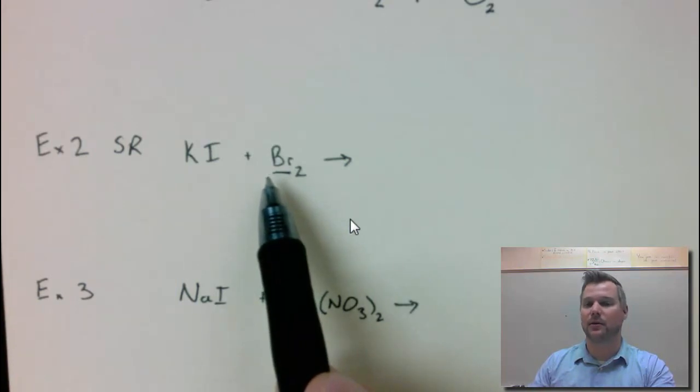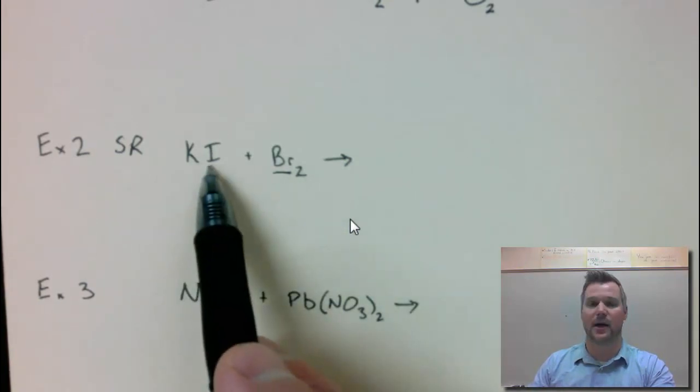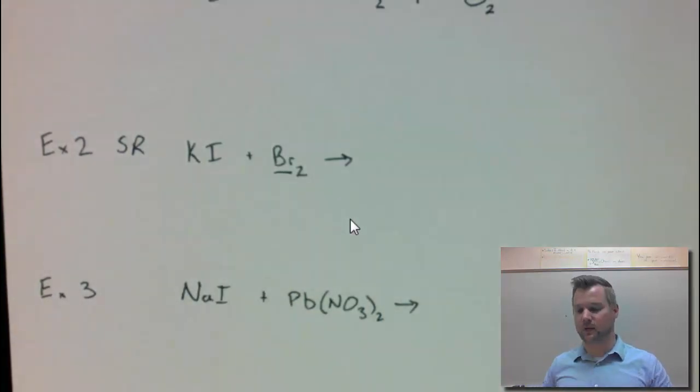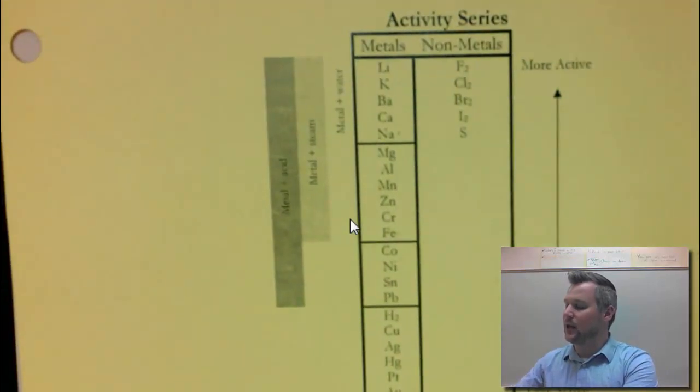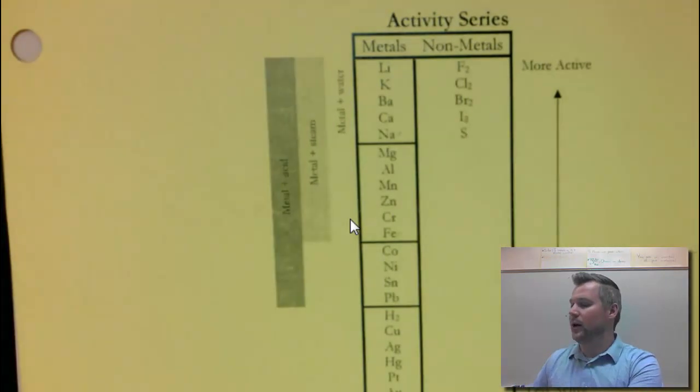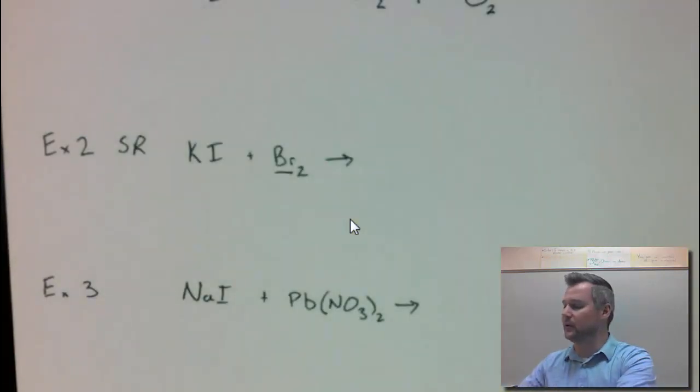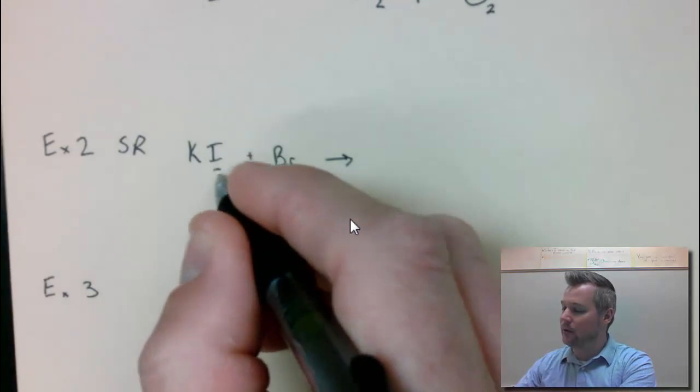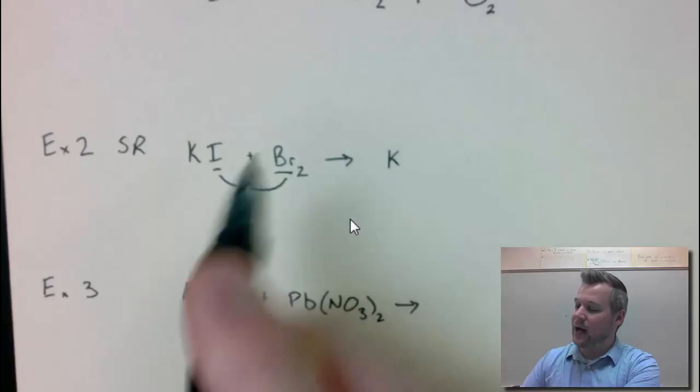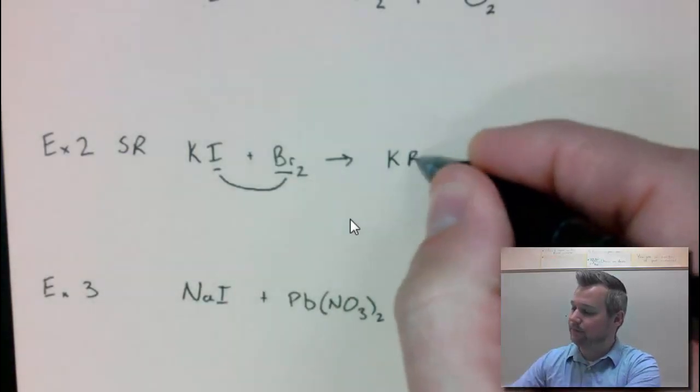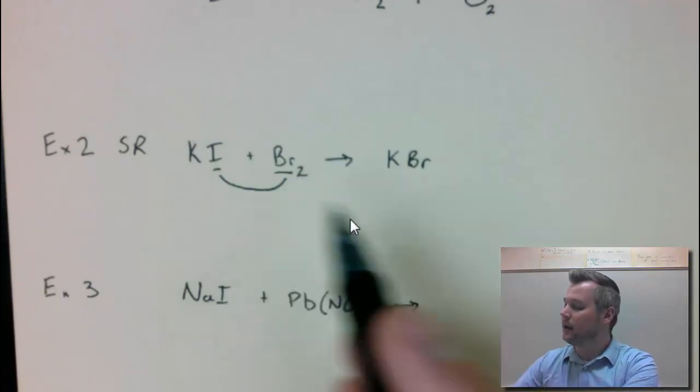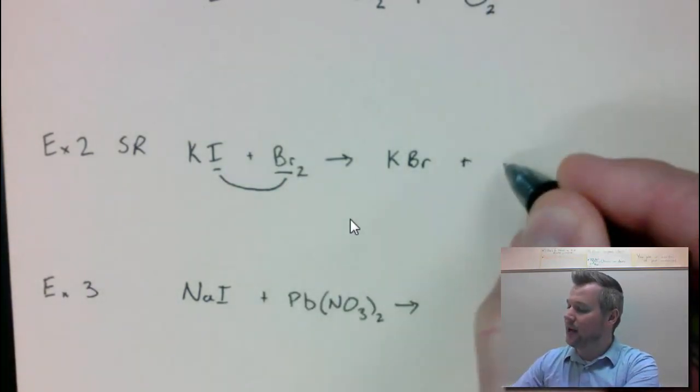Br is a non-metal, so it's going to try to replace the non-metal in the ionic, which is iodine. I need to make sure that this reaction will go to completion and I can use my activity series resource. I see that bromine is indeed more active than iodine. A more active replaces a less active for single replacements. So iodine and bromine are going to trade spots. So that means I need to write K, instead of having I behind it, I need to have bromine behind it. Notice I don't bring my subscript 2 across because this is not a polyatomic ion.